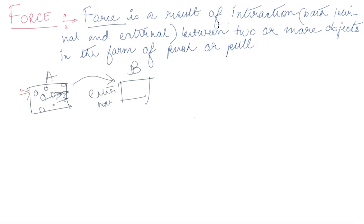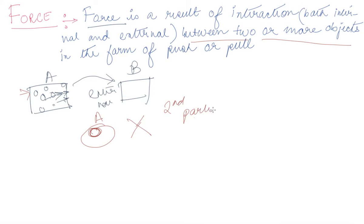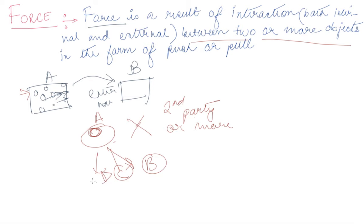Force happens because of the interaction between two or more objects. A single object A will never experience a force unless there is a second party — one or more other objects. Object A can experience force either because of interaction with B, or because of the combined interaction with B, C, D, and many more. Force is a result of interaction, both internally and externally, between two or more objects.